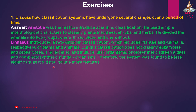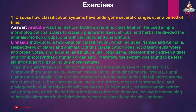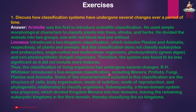It also failed to classify single-celled and multicellular organisms, photosynthetic green algae, and non-photosynthetic fungal organisms. Therefore, the system was found to be less significant as it did not include more features. R.H. Whittaker introduced the five-kingdom classification, including Monera, Protista, Fungi, Plantae, and Animalia.